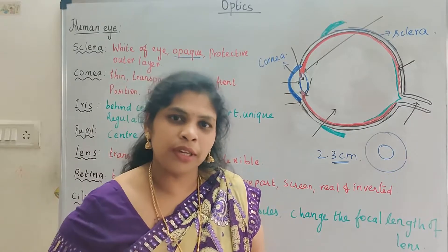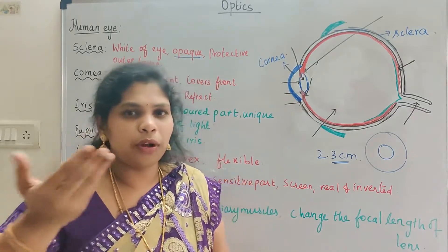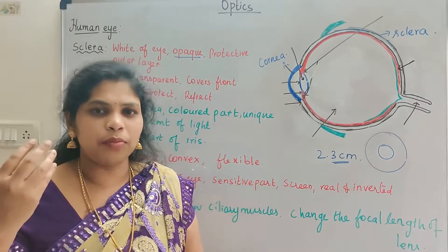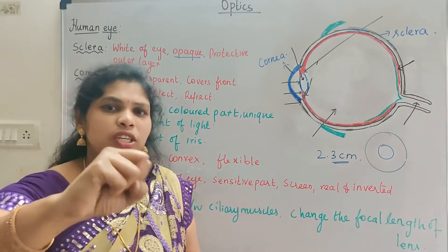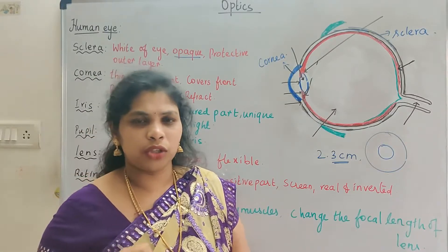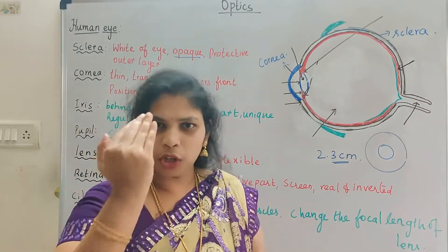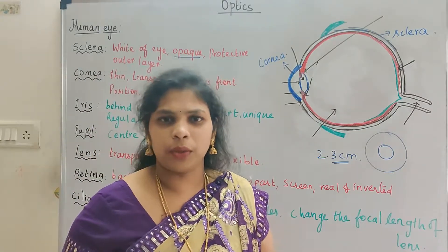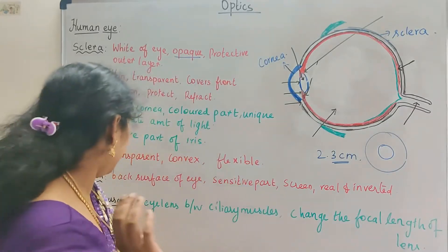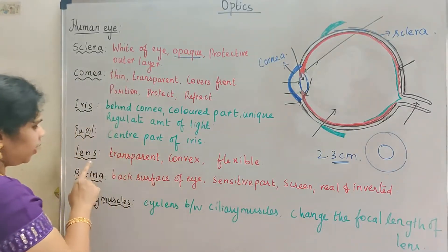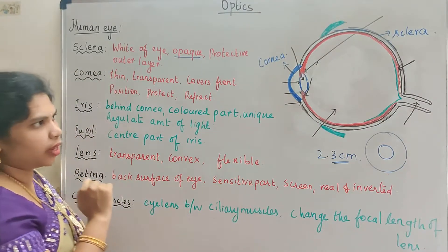If too much light enters, the eye can be damaged. So the iris and pupil work together to let in the right amount of light.